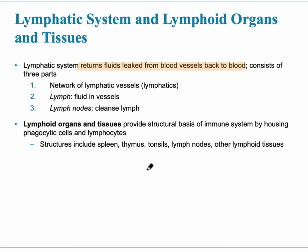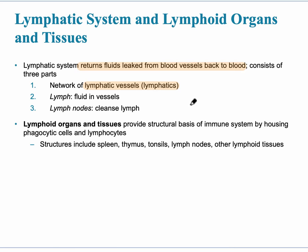The parts of the lymphatic system include, first, a large network of lymphatic vessels, also referred to simply as the lymphatics. These lymphatic vessels run alongside veins all throughout circulation.